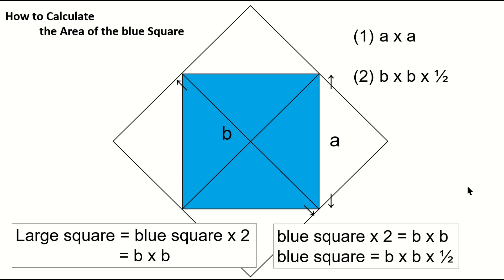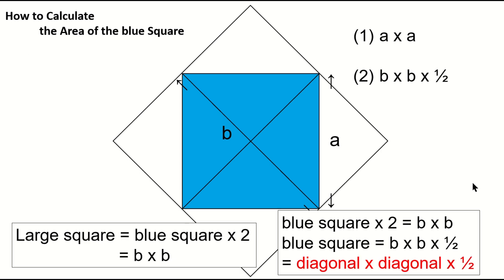In other words, the blue square is B times B times 1 half. That is, the diagonal of the square times the diagonal times 1 half.